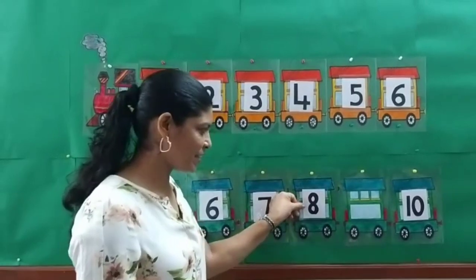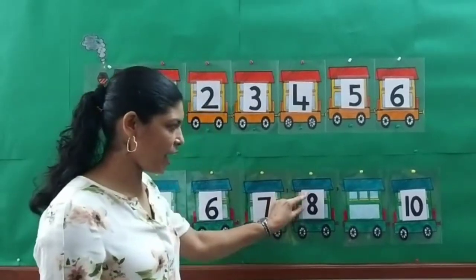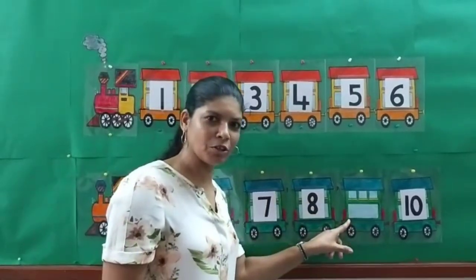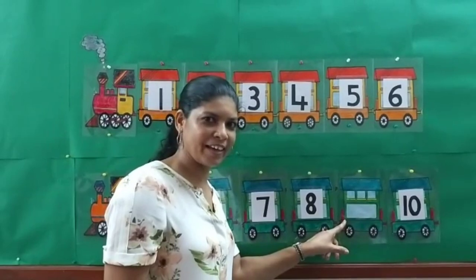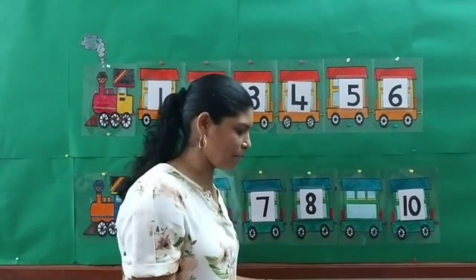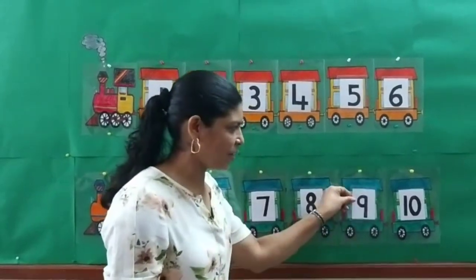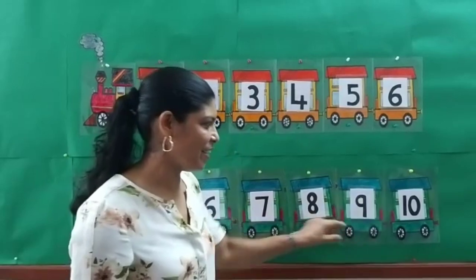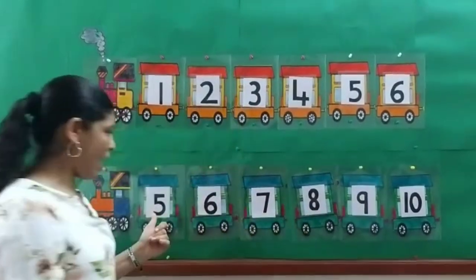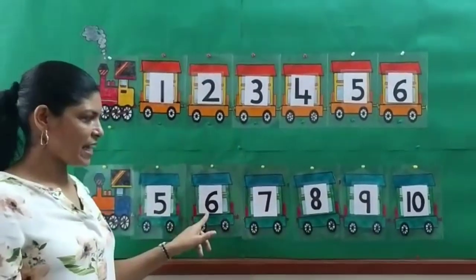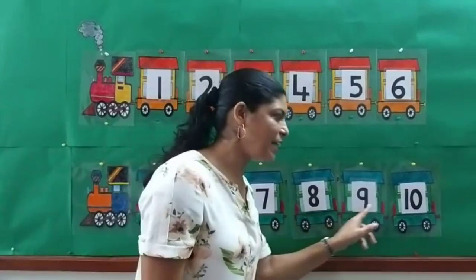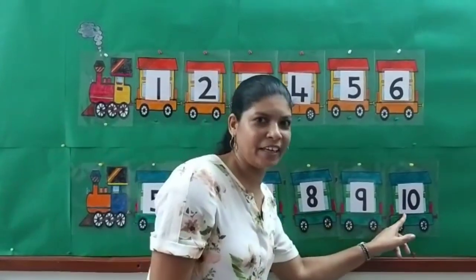You are right, so we have 8. Which is the next one, children? That's also missing. Yes, it's number 9. Smart children! We have 5, 6, 7, 8, 9, and 10.